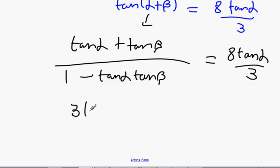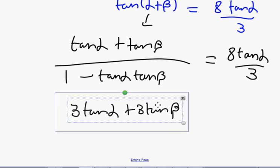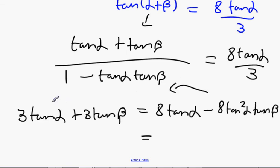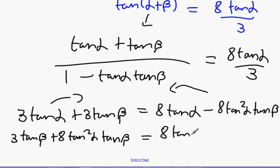Let's multiply. 3 tan alpha plus 3 tan beta is going to equal 8 tan alpha minus 8 tan squared alpha tan beta. So 3 tan beta plus 8 tan squared alpha tan beta equals 8 tan alpha minus 3 tan alpha, and that will get me 5 tan alpha.